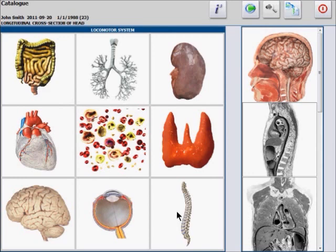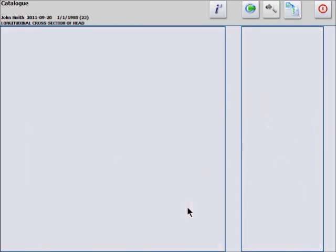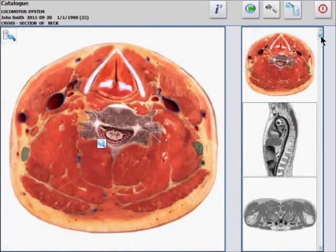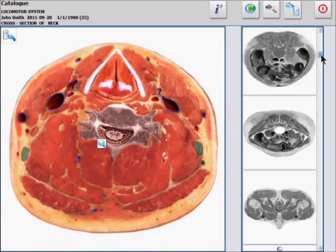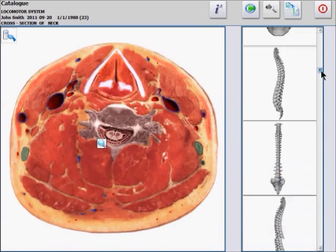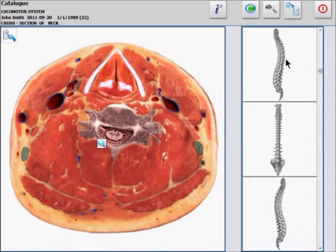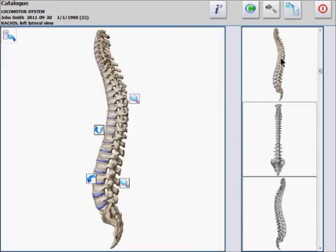For this demonstration, we will be choosing the spinal cord in the locomotor system. So we will be selecting this one here and simply scroll down. And here is the spinal cord. You can select it and start by clicking on the research manual choice.